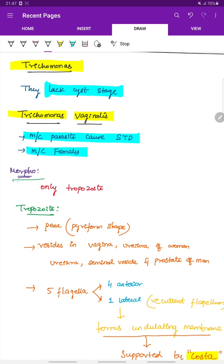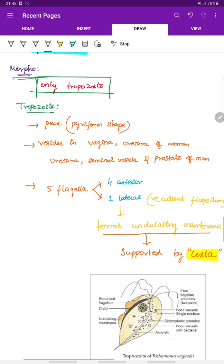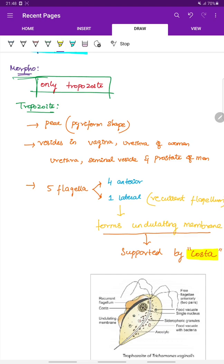Morphological forms. It has only trophozoid form. There is no cyst form. The trophozoid is pear shaped or pyriform shaped.